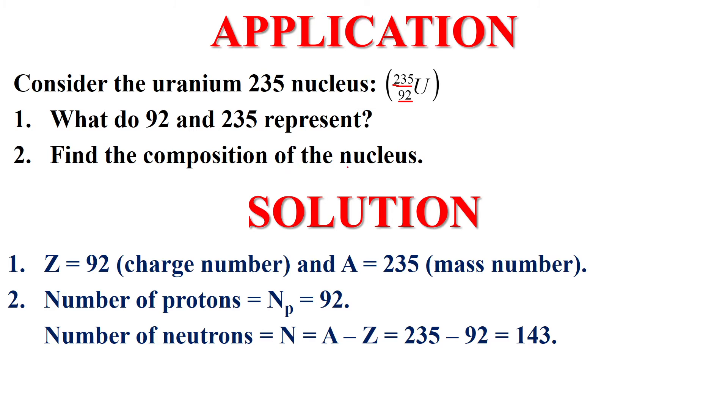Part 2: To find the composition of the nucleus. We need to find the number of protons in this nucleus and the number of neutrons. The number of protons is equal to Z equals to 92.